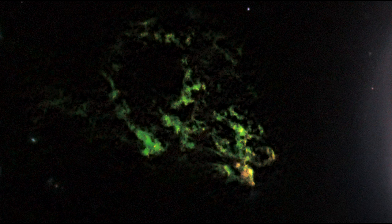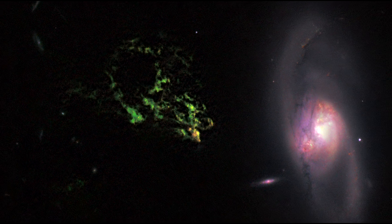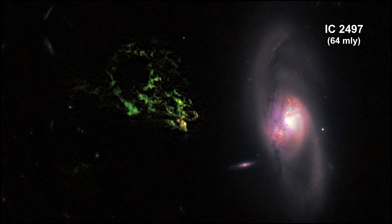Hanny's Voorwerp is one of the strangest space objects ever seen. A mysterious glowing green blob of gas is floating in space near a spiral galaxy, IC 2497.